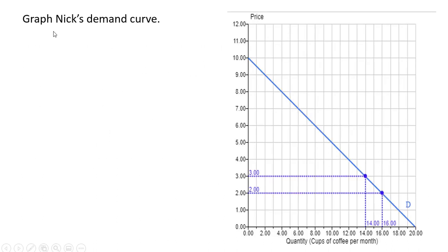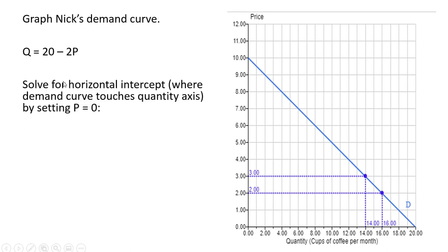The first thing I'm going to do is graph Nick's demand curve. Here's the demand equation Q = 20 - 2P. I'm going to solve for the horizontal intercept, where the demand curve touches the quantity axis, by setting P = 0, so Q = 20 - 2(0) = 20.